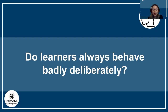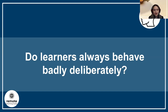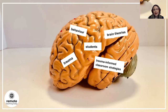Behavior is always a communication of a need. That's why we need to help students find different strategies to cope with stress, for example. This also explains why learners find themselves under stress when finding it difficult to behave appropriately in classroom settings. The question is: how can we help them to feel safe in class? So now we will delve into some brain theories to better understand how trauma affects students and their behavior.